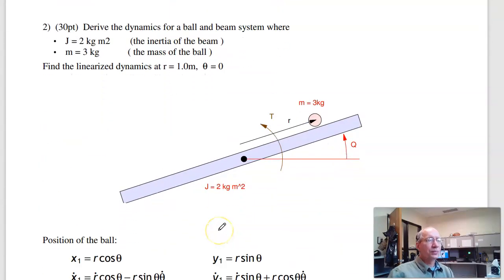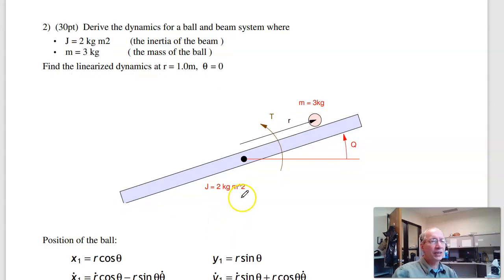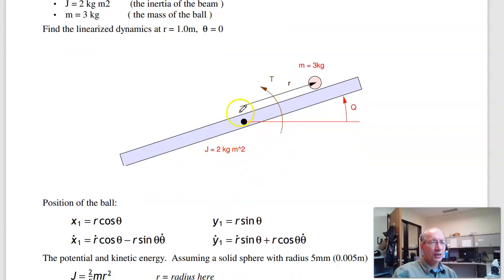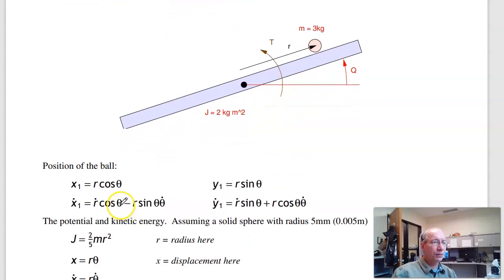Problem two is the same approach but for a ball-and-beam system. Starting with kinetic and potential energy: the position of the ball is r cos θ in the x-direction and r sin θ in the y-direction. Taking the full derivative gives x-dot = r-dot cos θ − r sin θ · θ-dot, and likewise for y-dot.